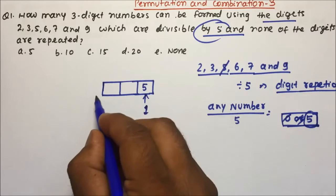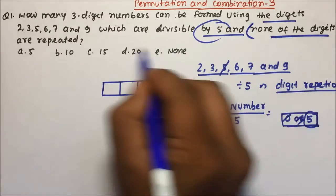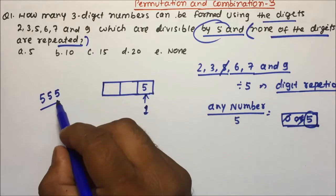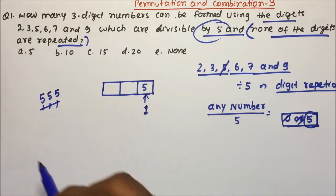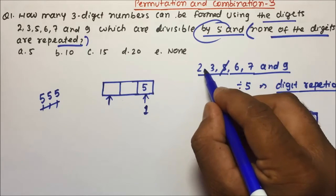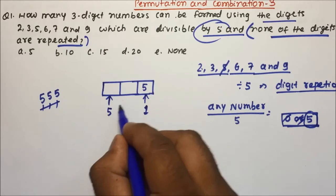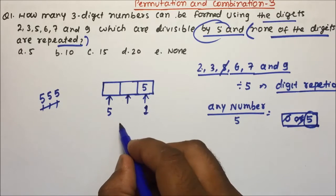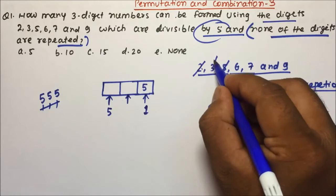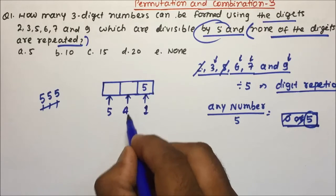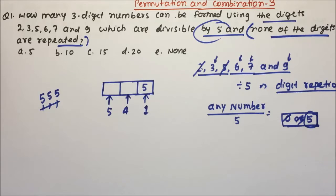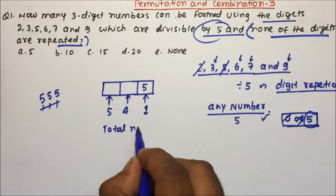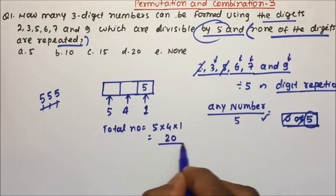Now, 5 is already placed at the end. The same 5 should not repeat because the question clearly states none of the digits are repeated. So how many options do we have for the remaining places? We cannot put 5 again, so we have 5 choices for the second-to-last place. Suppose you put 2 there — then you are left with 4 choices for the first place. So the total number is 5 × 4 × 1 = 20.